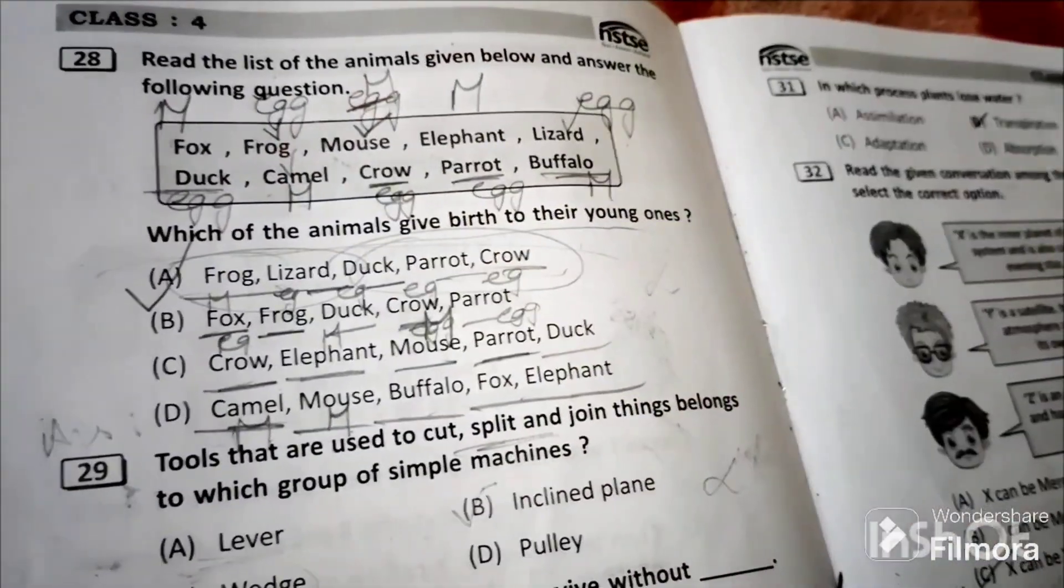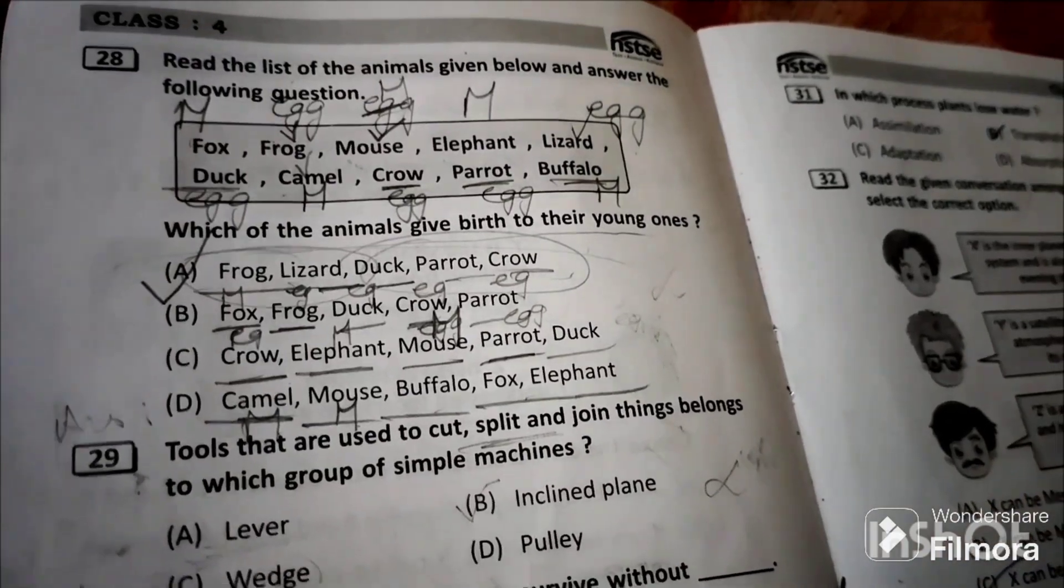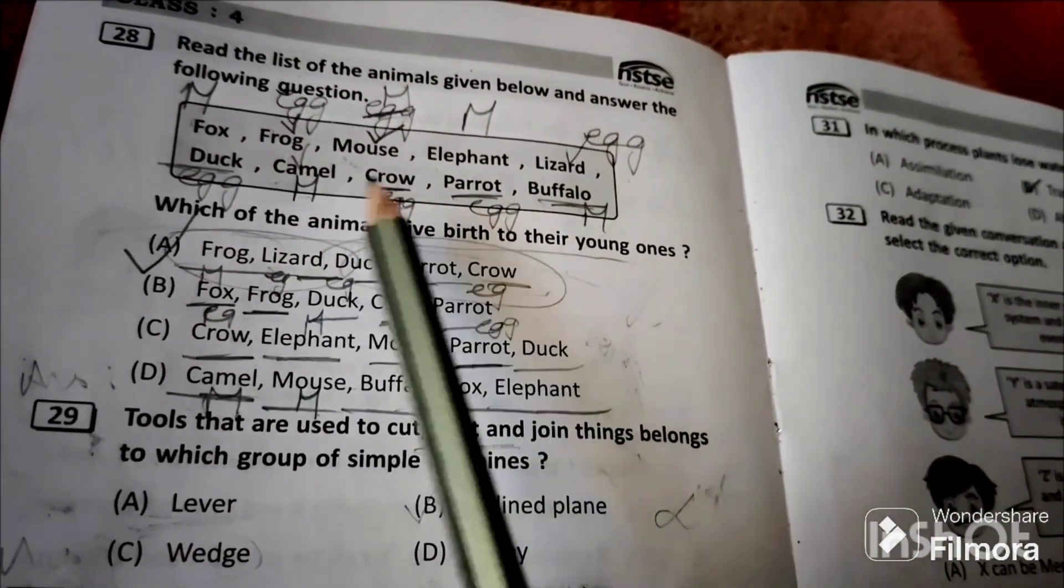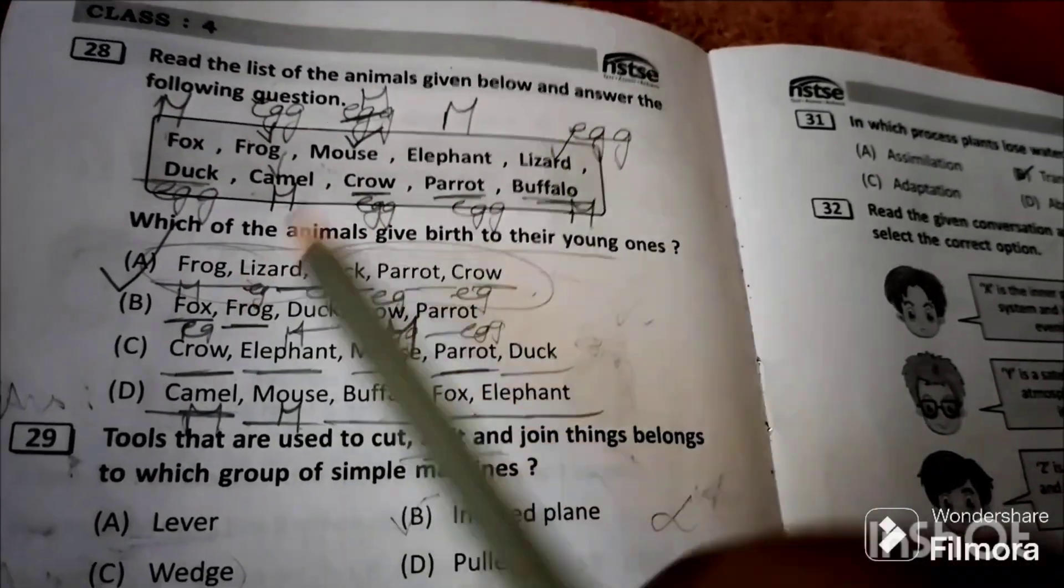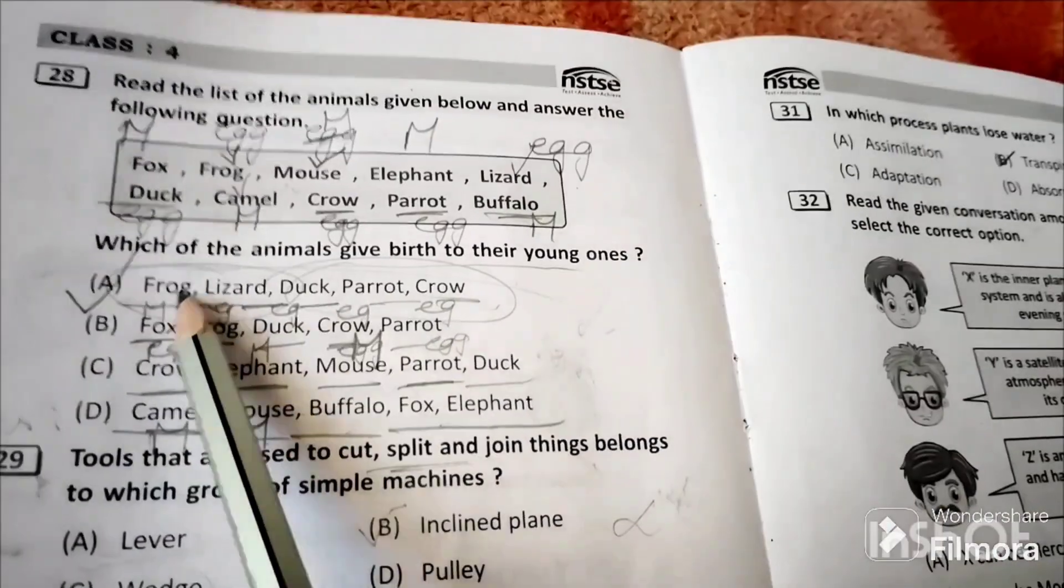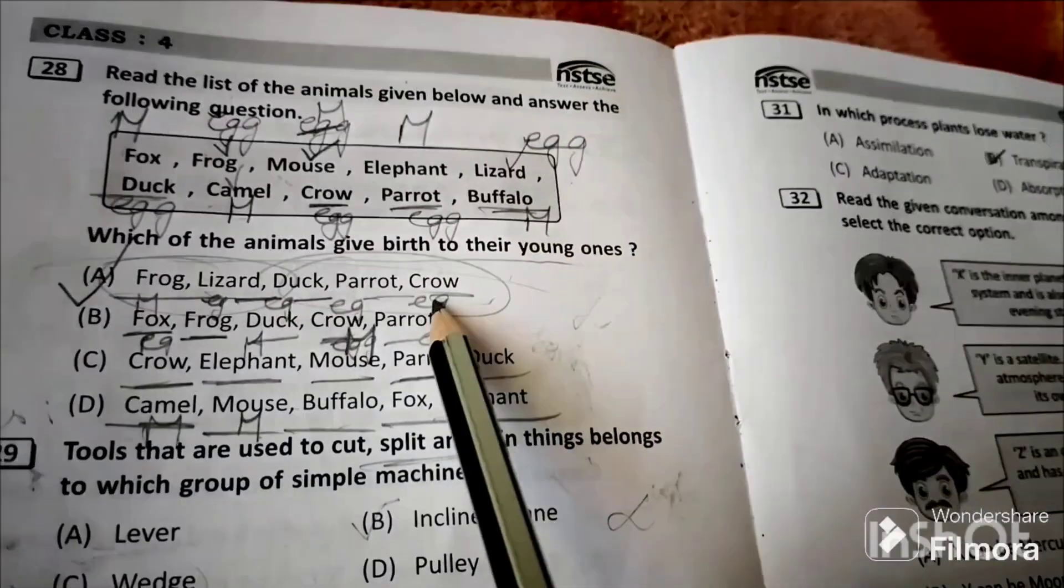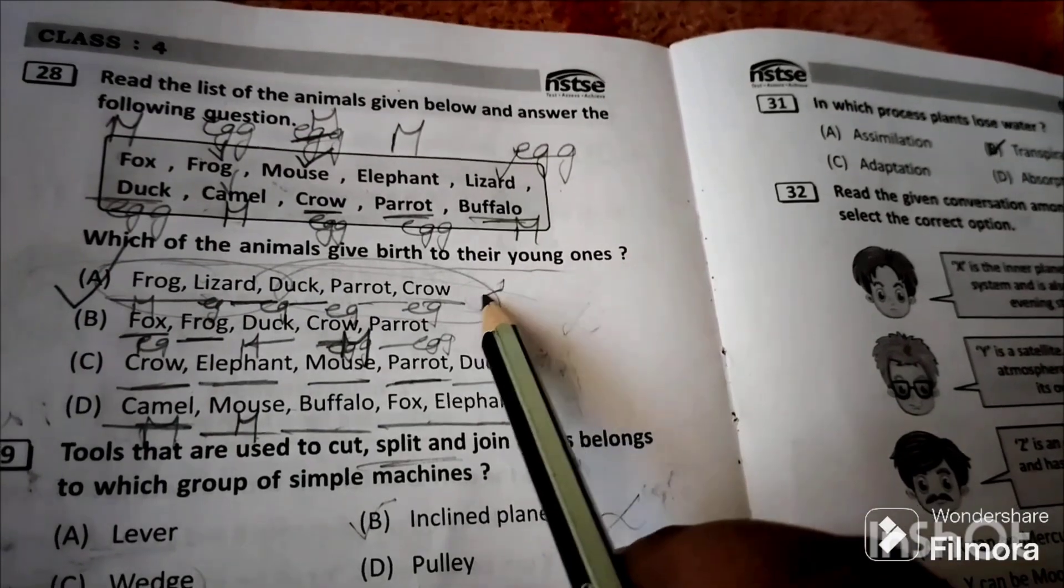Question 28: Read the list of animals given below: fox, frog, mouse, elephant, lizard, duck, camel, crow, parrot, buffalo. Which of the animals give birth to their young ones? Frog lays eggs, lizard lays eggs, duck lays eggs, parrot lays eggs, crow lays eggs. All are egg laying animals, so this option won't come.